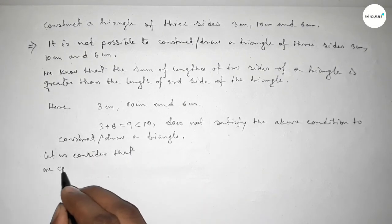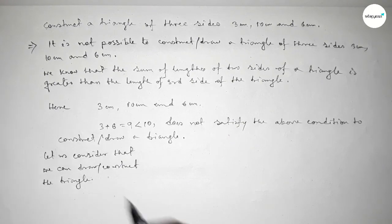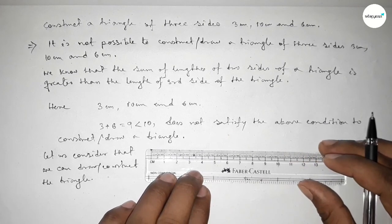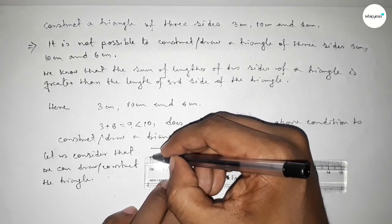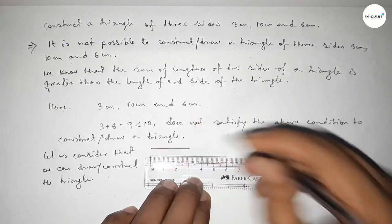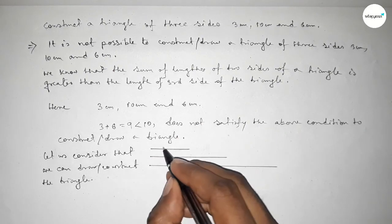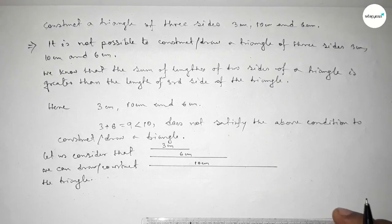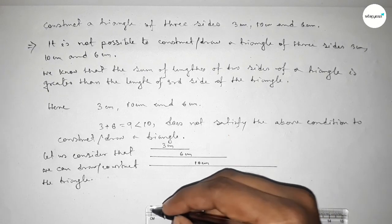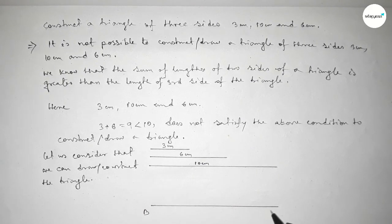Now let us assume that we can construct the triangle with these three sides. First, we draw the three sides: 3 centimeters, 6 centimeters, and 10 centimeters. Drawing the 10 centimeter base line, marking point B and point C at its ends.